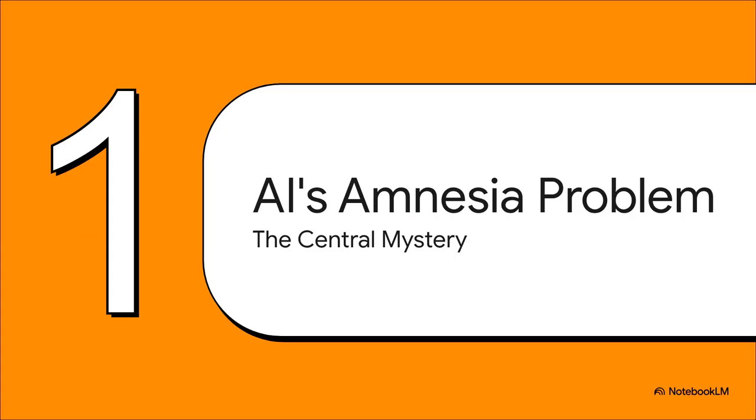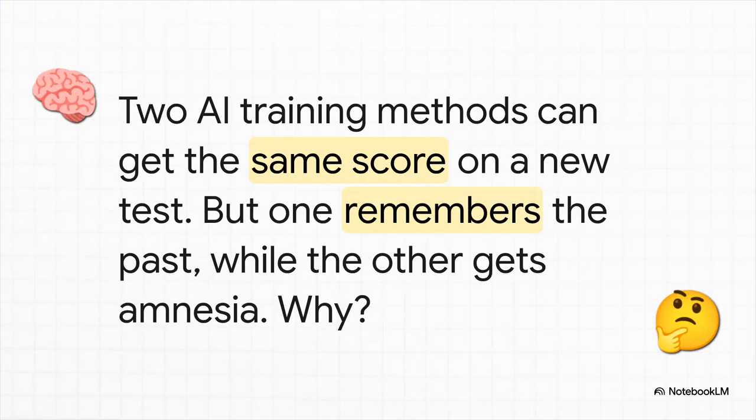Alright, so let's set this up like the genuine mystery it is. Section 1: The AI's Amnesia Problem. Okay, so picture this. This is the exact puzzle the researchers were looking at. You take two identical AI models, you train them on a new skill using two different training methods, and you get them to the exact same performance.